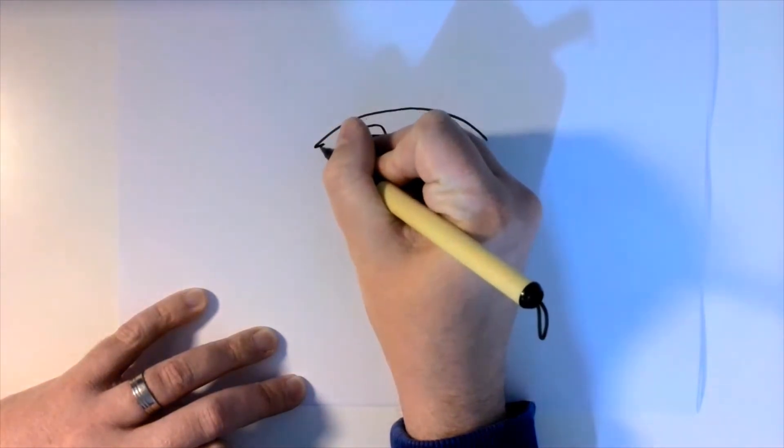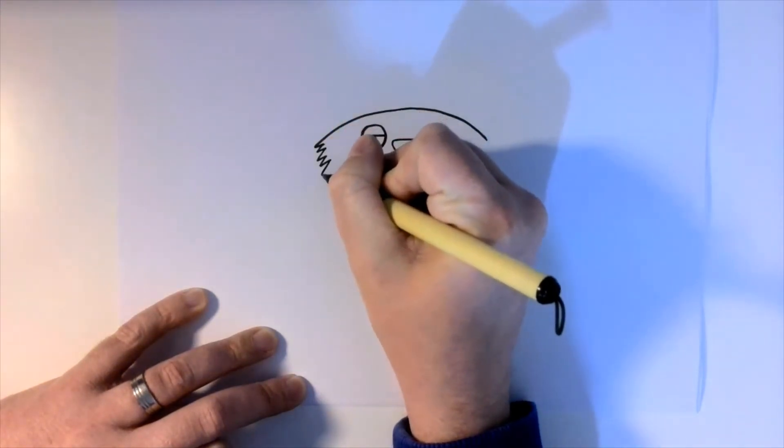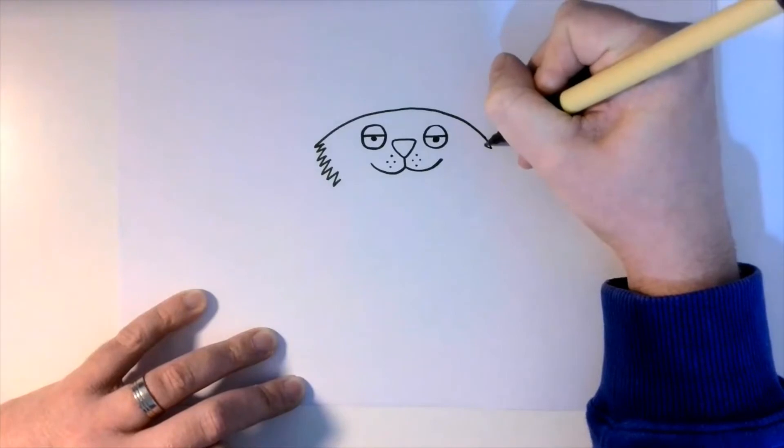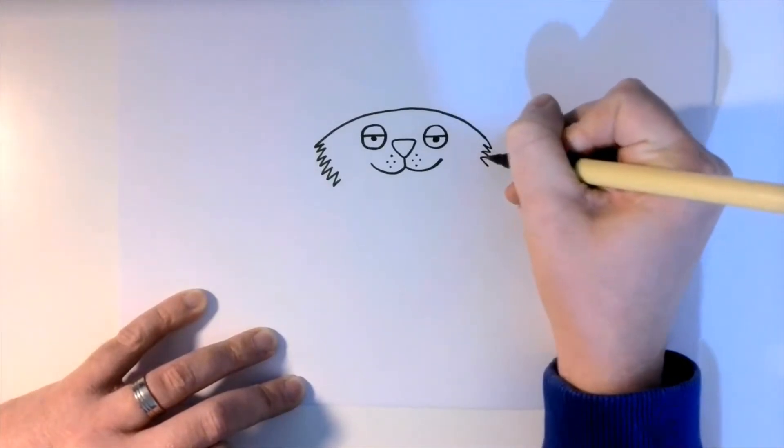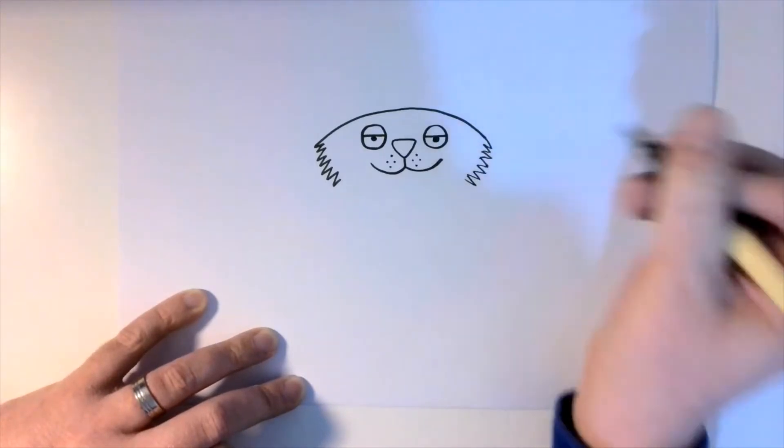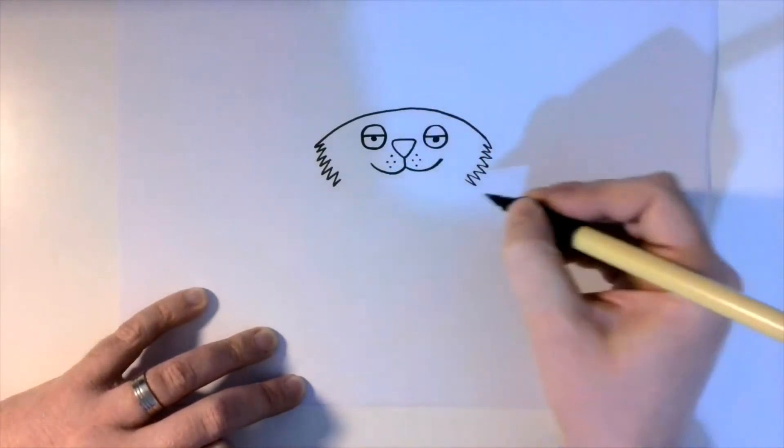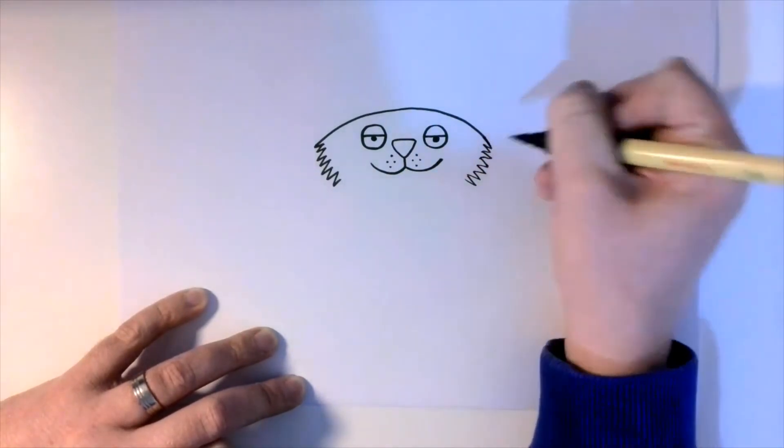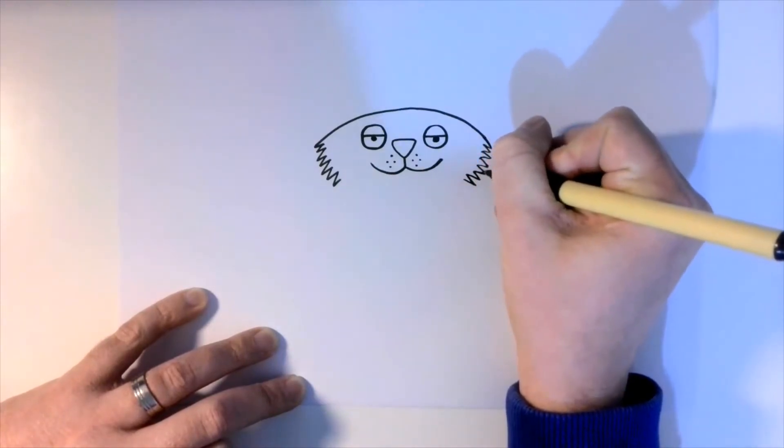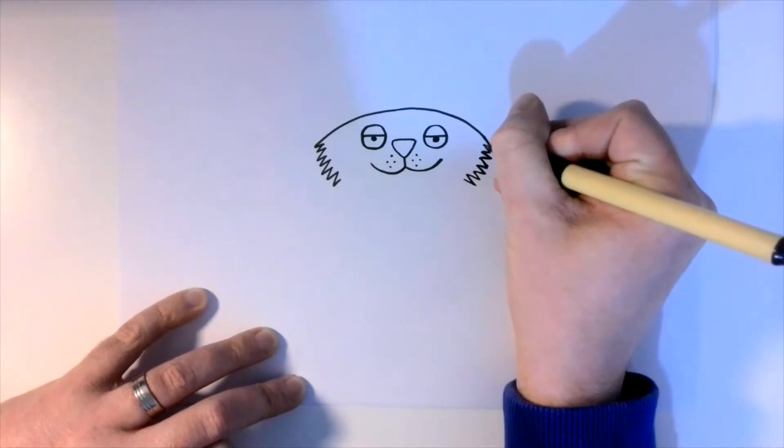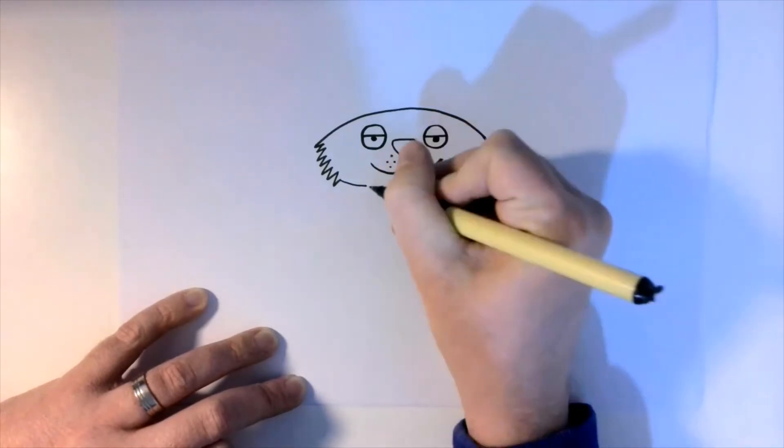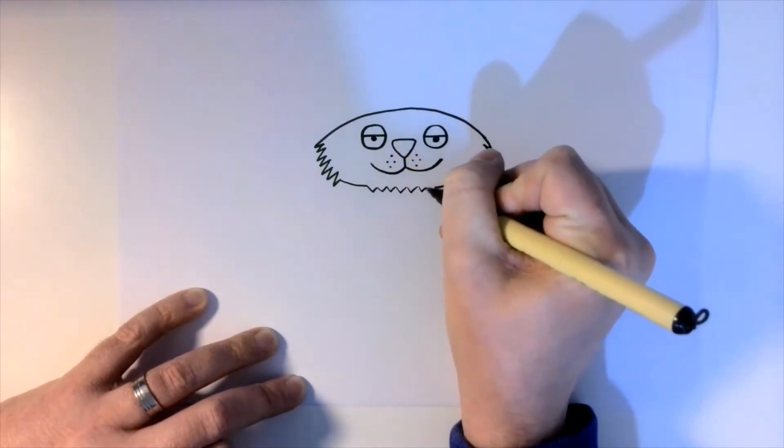From here, add in just a few zigzags, and this gives the impression that the cat is quite furry, it's got like this furry face. You could carry that all the way around if you wanted to, and what I quite like to do is kind of start again, then do these zigzags like this, almost gives like a furry chin.